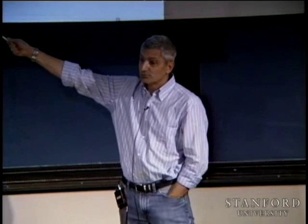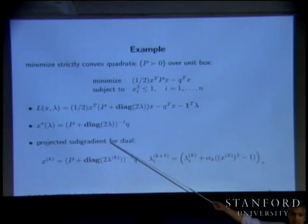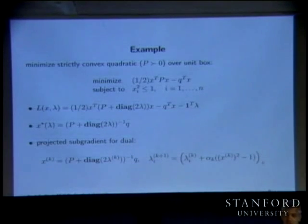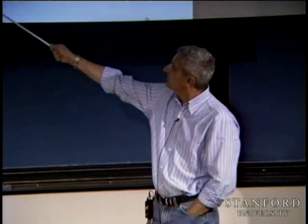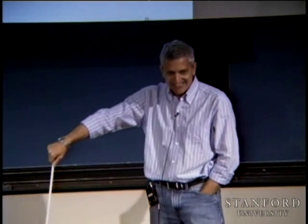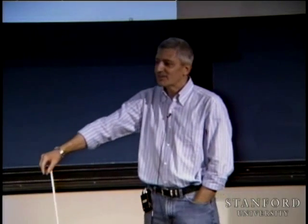If P is full, that's N cubed — a Cholesky factorization and a forward and backward substitution. If P is banded, the answer is N*K squared.